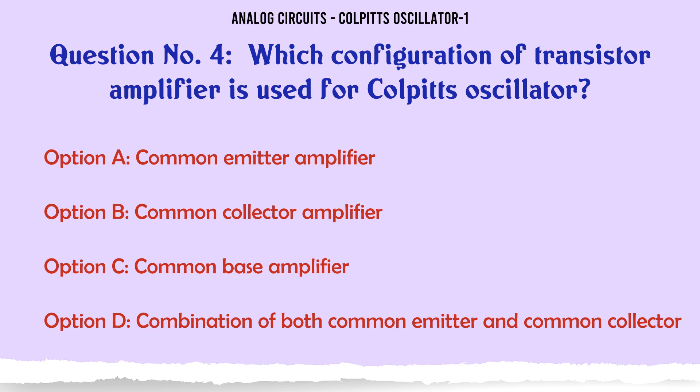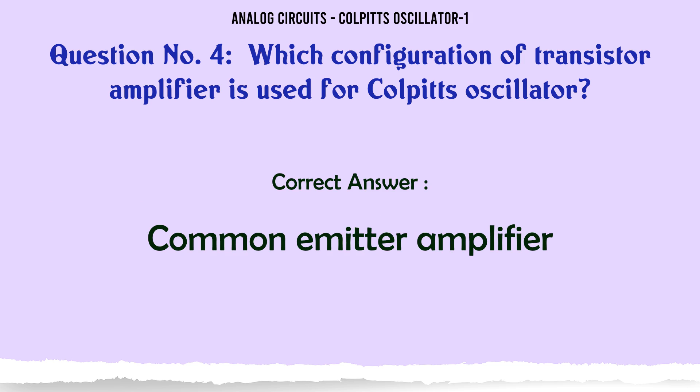Which configuration of transistor amplifier is used for Colpitt's oscillator? A) Common emitter amplifier, B) Common collector amplifier, C) Common base amplifier, D) Combination of both common emitter and common collector. The correct answer is: Common emitter amplifier.